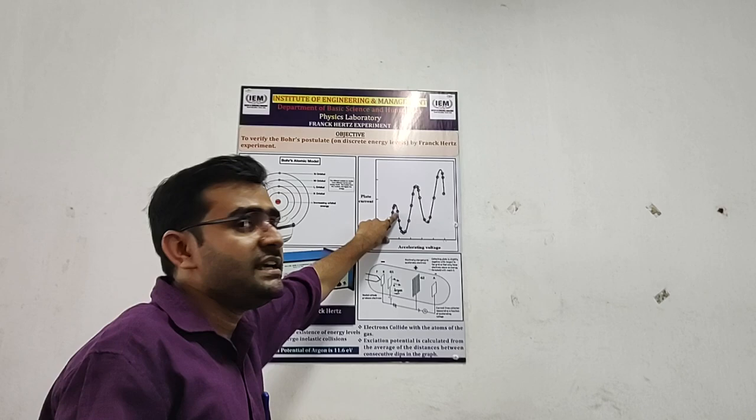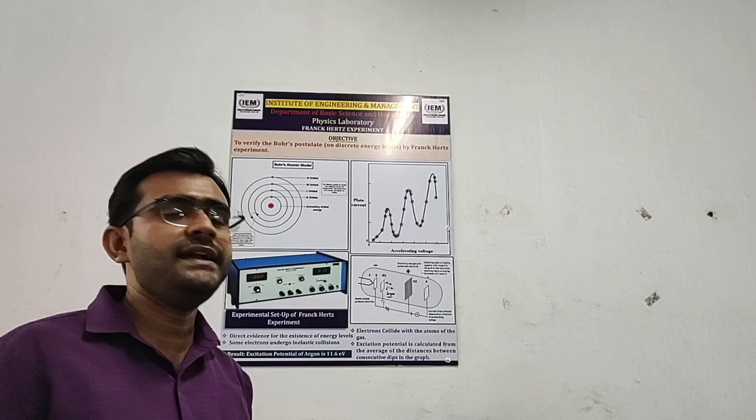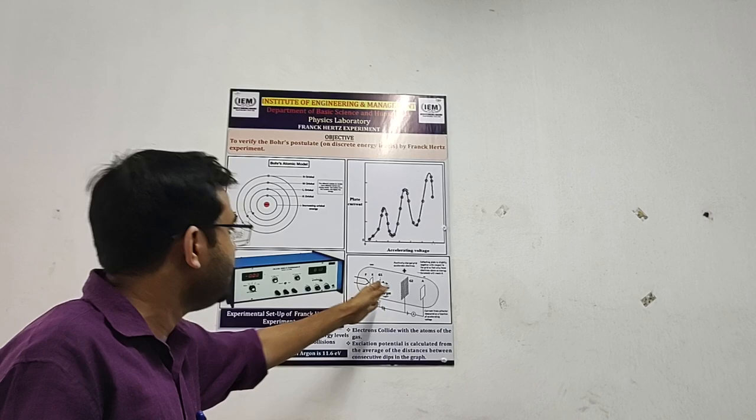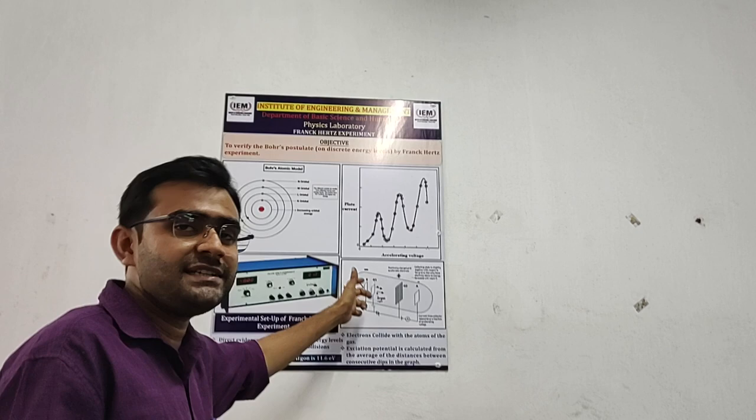Again it is increasing. So, I need to provide extra amount of potential to the electrode so that the electrons that are coming back towards the cathode should have sufficient amount of energy again in order to go towards the anode.